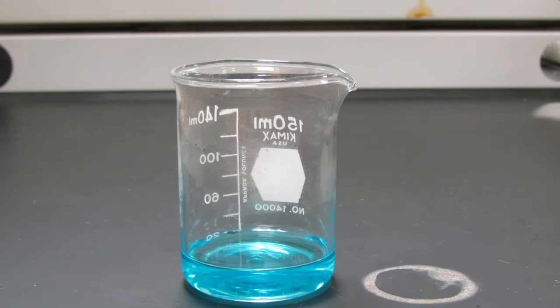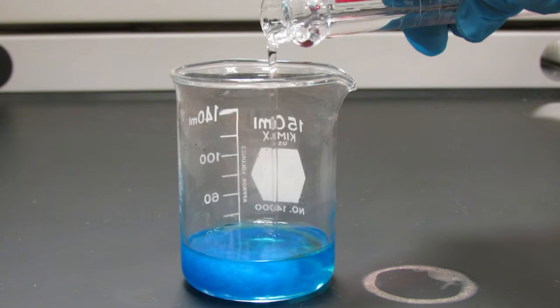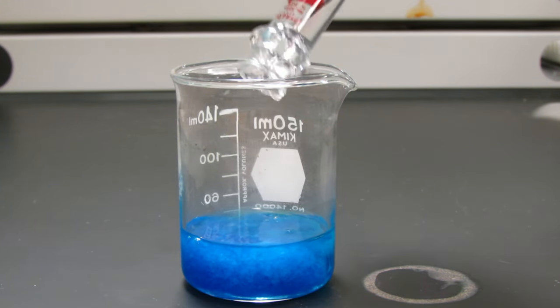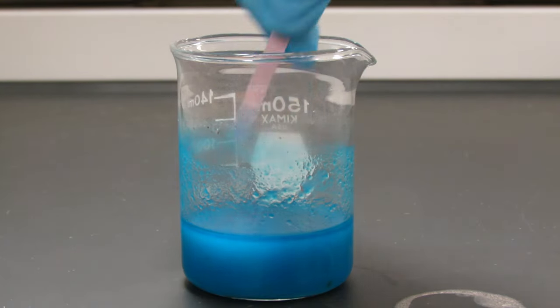You can see the light blue copper nitrate that is formed. Now add 20 milliliters of 6 molar sodium hydroxide to the copper nitrate. You can see a dark blue precipitate of copper hydroxide. Stir this up to make sure that it's all reacted.